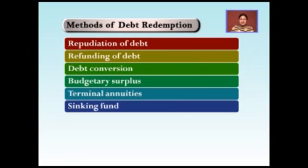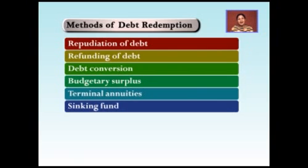Next is the sinking fund, a reliable method adopted by the government. The government establishes a separate fund for the purpose of repaying its debt — like a piggy bank. Every month or after a regular time duration, the government keeps depositing money, and once repayment time comes, it takes out the money from the sinking fund and repays the debt.